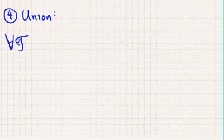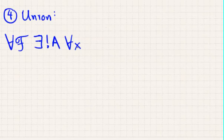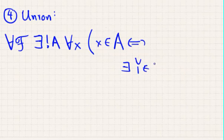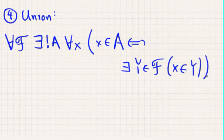So, next we have the axiom of union. I'll state the axiom first. The axiom states that for all fancy f, I'll comment on what that means in a second, there exists a unique A such that for all x, x is in big A, if and only if, I'll write this underneath, there exists a y in f such that x is in y.